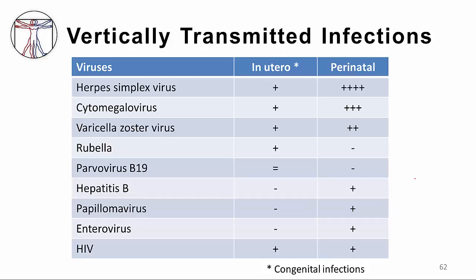There are a number of other viruses that can be transmitted vertically from mother to baby, either in utero — causing true congenital infection — or perinatally. This table depicts these viruses and illustrates the relative frequency of in utero acquisition versus perinatal acquisition. For example, in utero acquisition is low with herpes, while perinatal acquisition is high. The other viruses are listed there for your review.